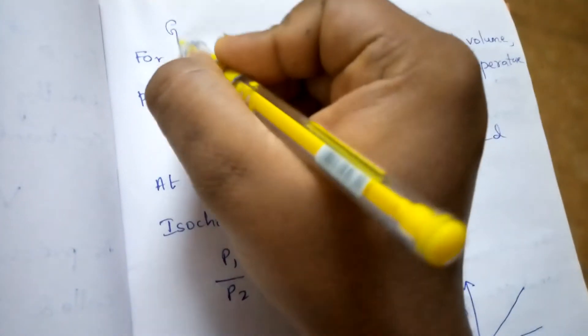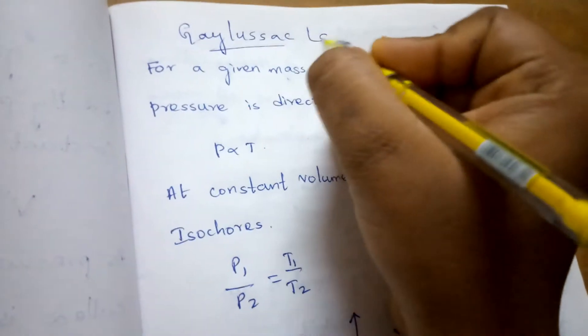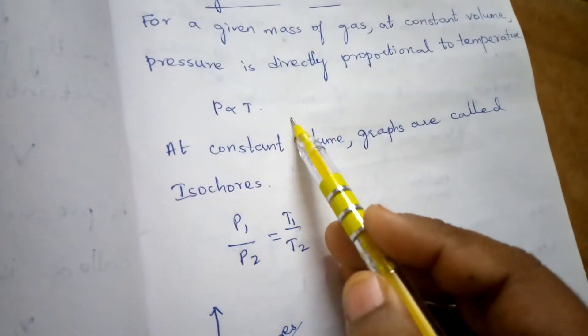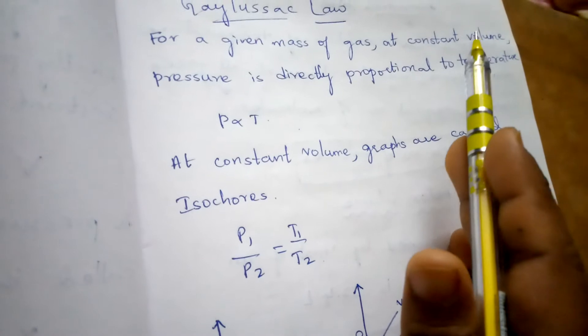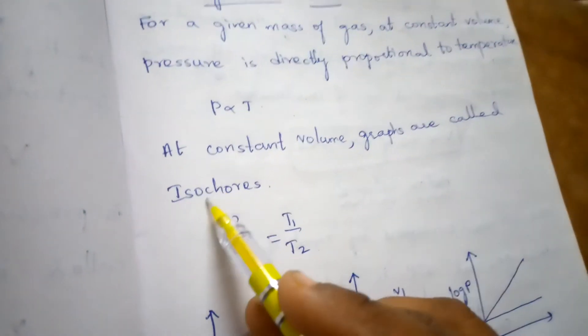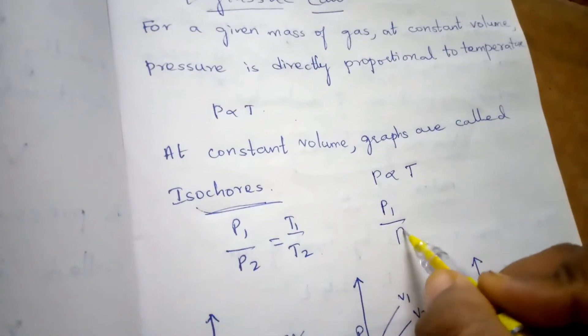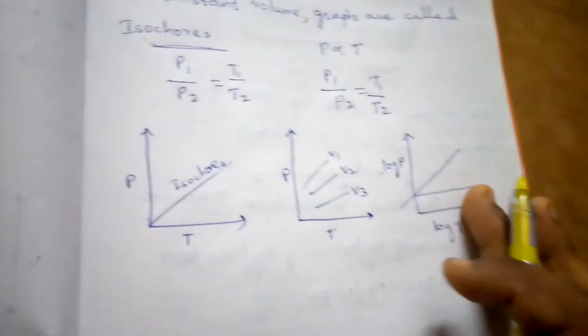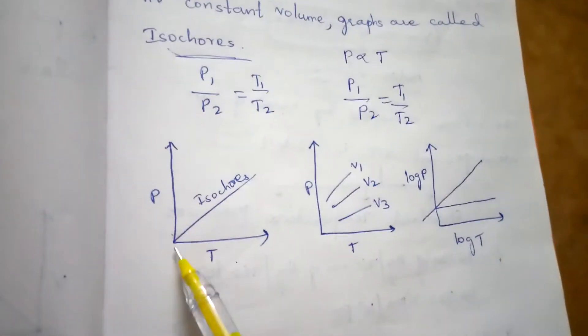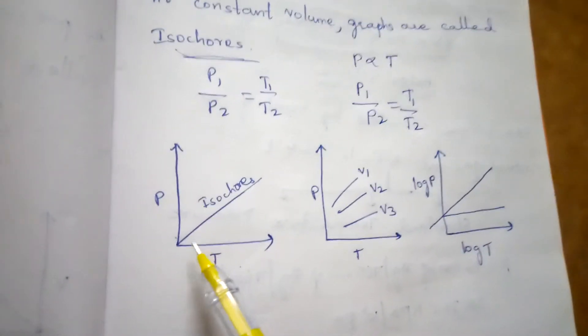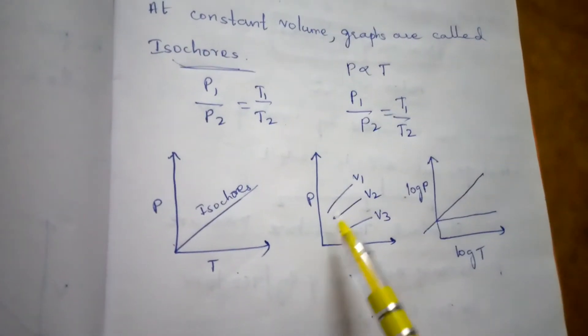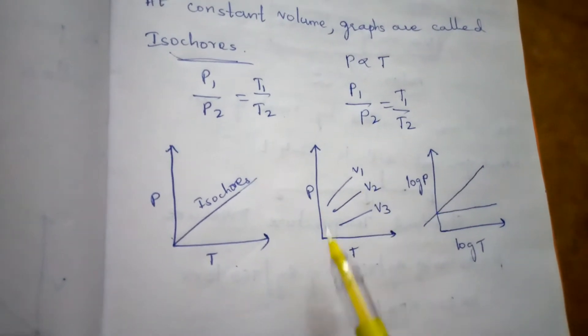Now coming to Gay-Lussac's law. While Charles's law says volume is directly proportional to temperature, Gay-Lussac's law states that pressure is directly proportional to temperature at constant volume. Graphs plotted at constant volume are called isochores. Since P ∝ T, we write P1/P2 = T1/T2, and plotting P vs T gives a straight line — an isochore.